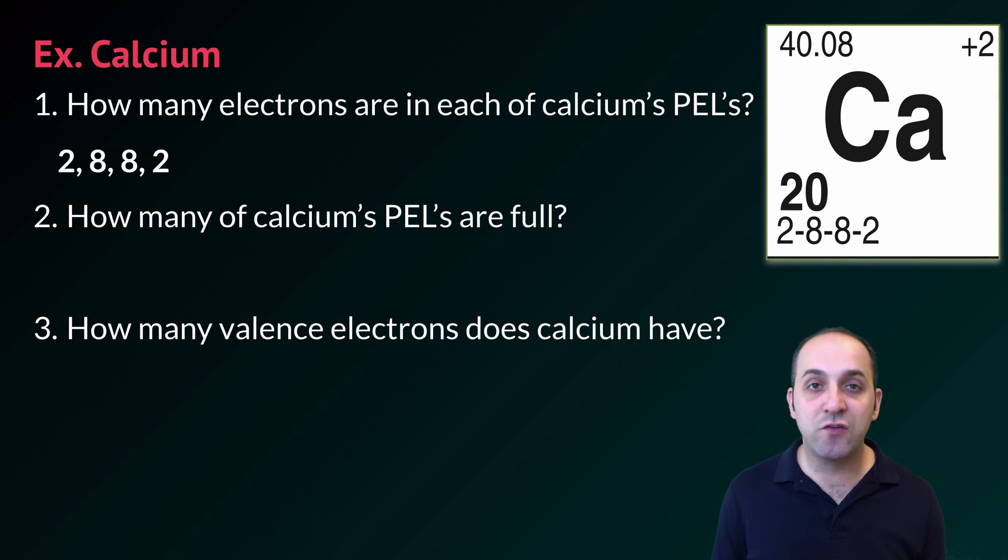How many of calcium's principal energy levels are full? The first 2. The first principal energy level fits a total of 2 electrons and it has it in there and the second principal energy level fits a total of 8 and you can see that that is totally occupied. The third and fourth principal energy levels still have more space where more electrons could be placed.